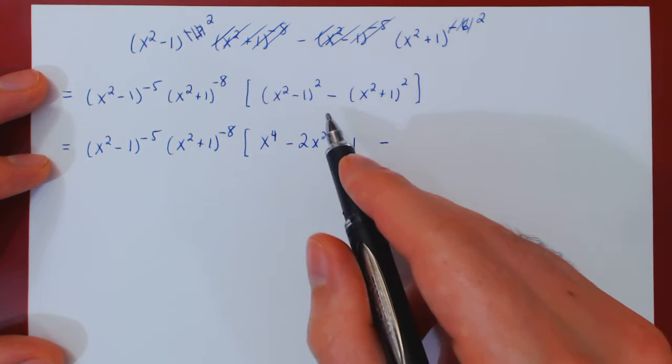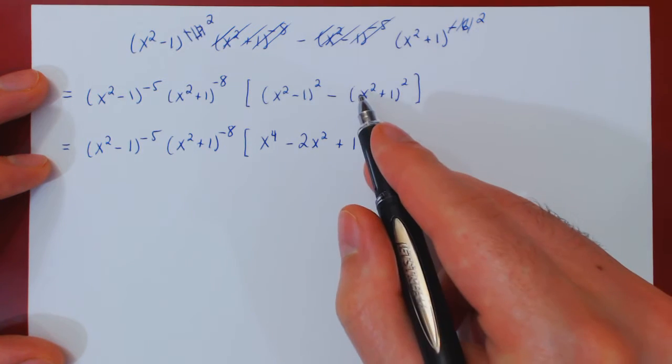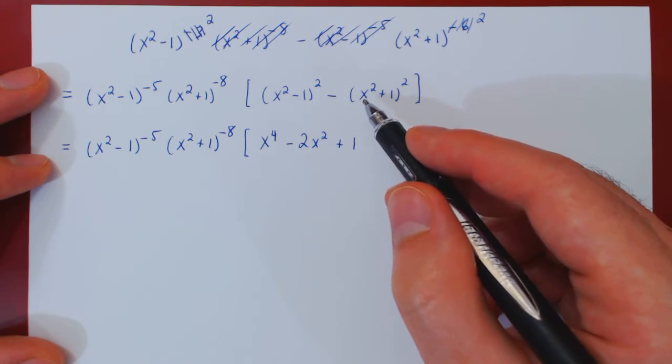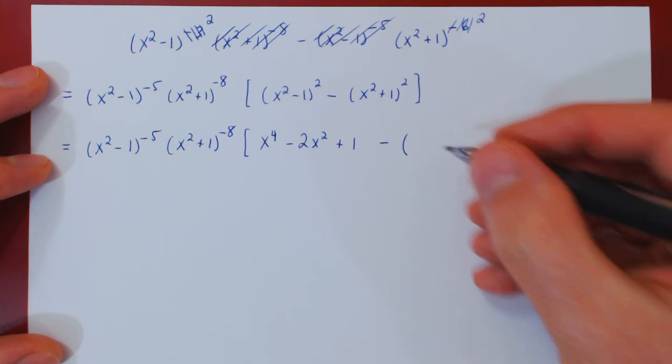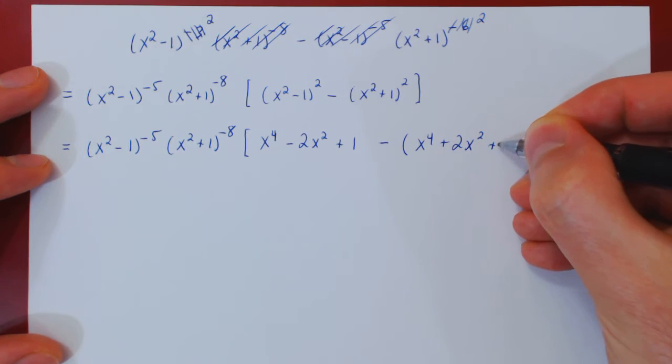Negative 1 minus, and here be careful, the negative is applied to the entire square. So everything here must be negated. So open up your parentheses. And now square this, you get x to the 4 plus 2x squared plus 1.